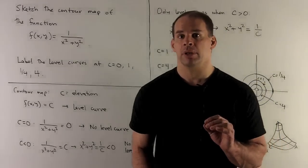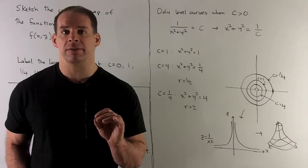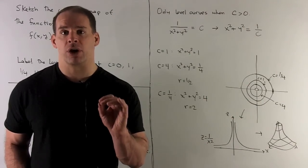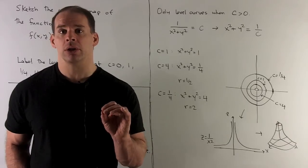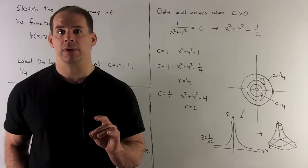We're only going to have level curves when c is positive. And then our level curve for a given c is just going to be a circle with radius 1/√c.